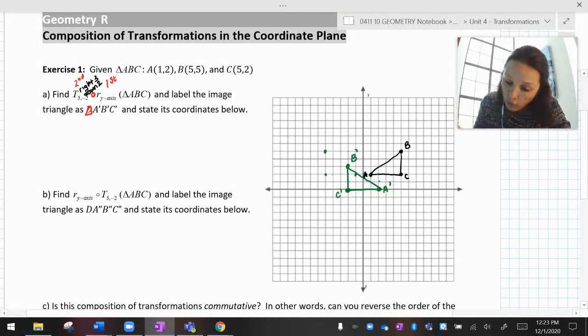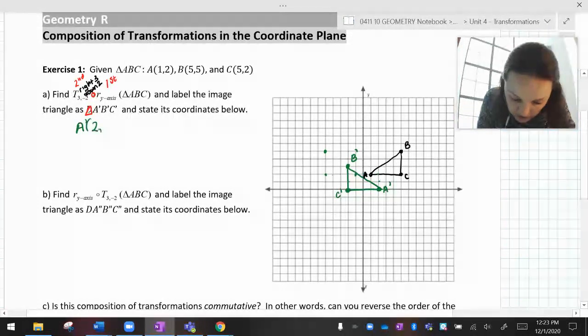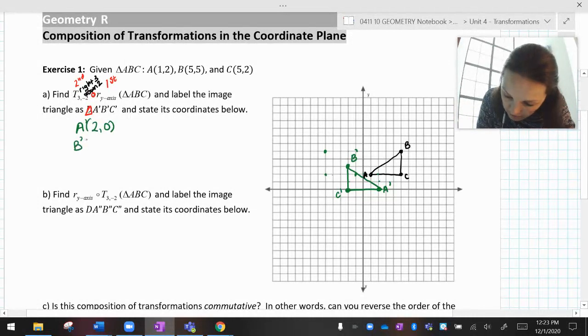But then I'm supposed to go right three down two. So that's B prime. And then C, but then go right three down two. And there's A prime, B prime, C prime. And it says state the new coordinates. Okay. I can do that. So my new coordinates are A prime is (2, 0), B prime is (-2, 3), and C prime is (-2, 0). It's not so bad.